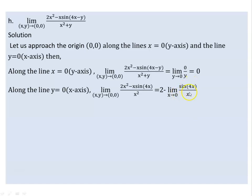We get 0 over 0, which is an indeterminate type of limit. This calls for L'Hôpital's rule — the loop. Sin(x) derivative is cos(x), and the derivative of the denominator is 1. Applying the rule: 4 times 0, then cos(0) is equal to 1, giving 0.